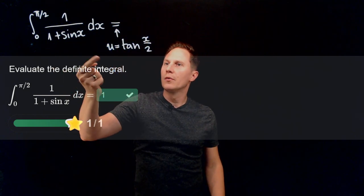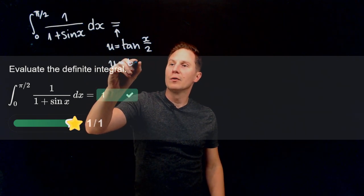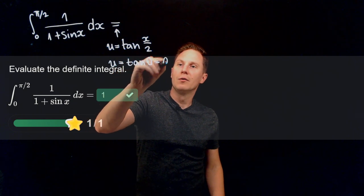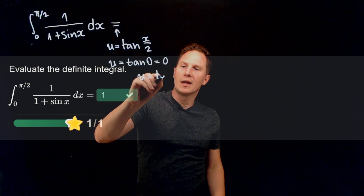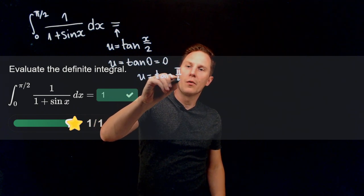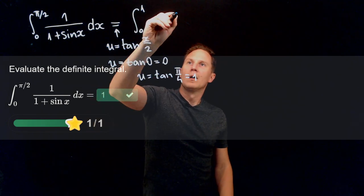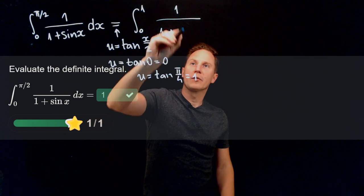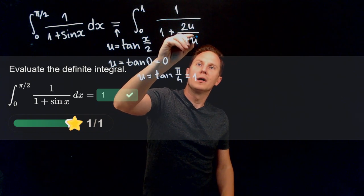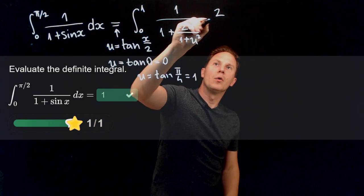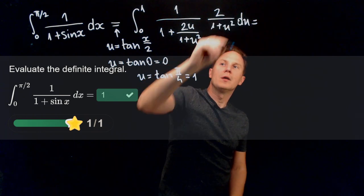As we saw before, if x = 0, then u = tan(0) = 0. If x = π/2, then u = tan(π/4) = 1. So we integrate from 0 to 1. The integral 1/(1 + sin x) becomes 1/(1 + 2u/(1 + u²)), and dx = 2/(1 + u²)du.